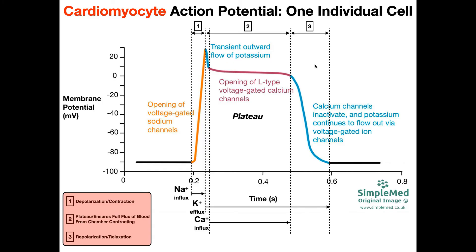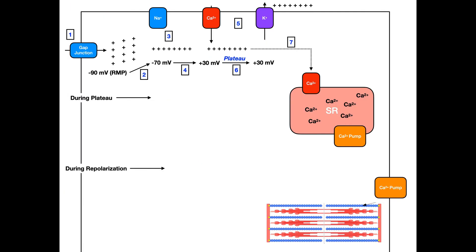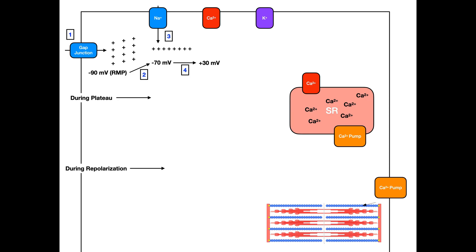Hopefully this video gave you a good understanding of the action potential diagram for the cardiomyocyte. Just make sure you differentiate it from the pacemaker potential, and also check out the companion video where we talk about the biochemical steps that occur inside the cardiomyocyte. Please make sure to like this video and subscribe to my channel for future videos and notifications.